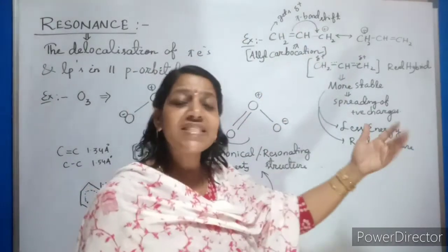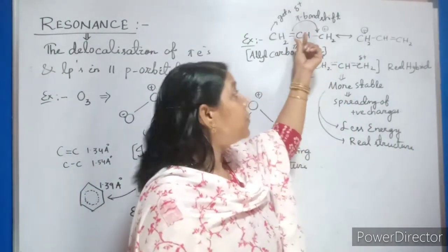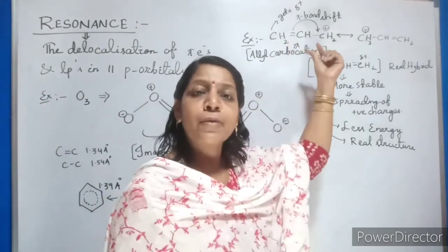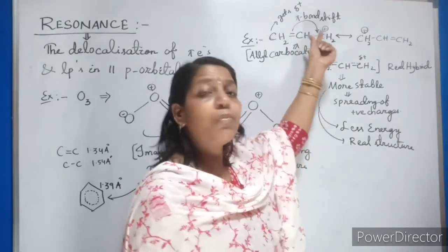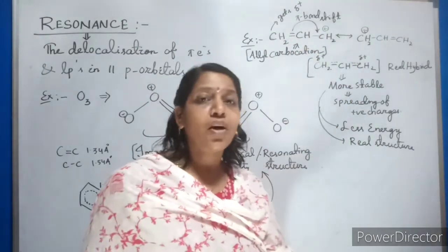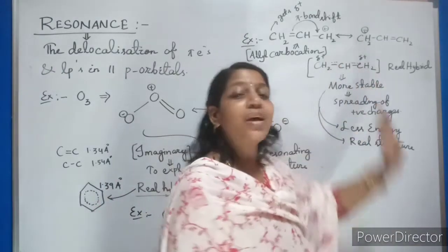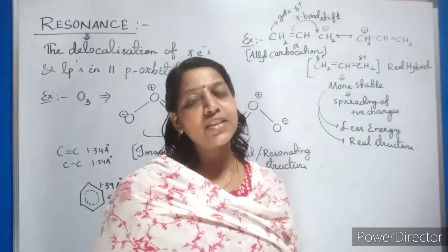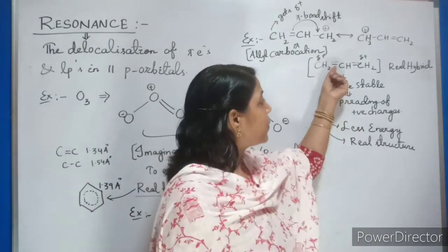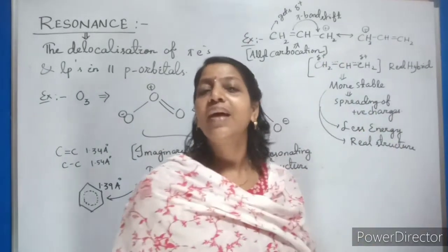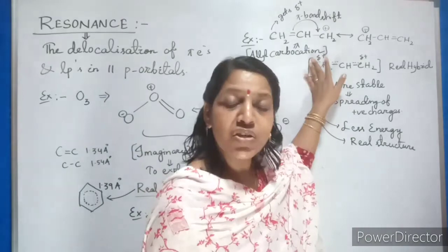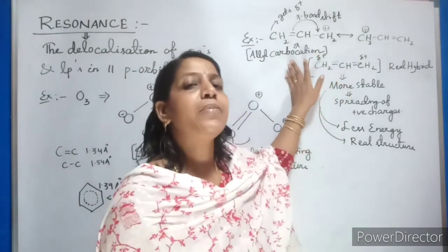How the way we are representing? One is double bond, one is single bond. Obviously double bond whatever the bond length and single bond whatever the bond length varies a lot. But when it is coming to real, we are finding it is same bond length. To represent that we are taking the help of a one solid line along with one dotted line. This is actually real structure, the real hybrid structure.